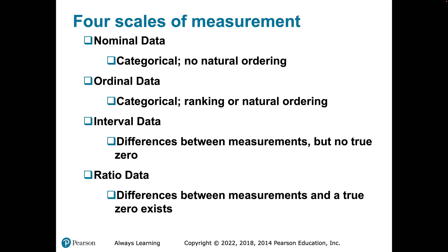We're going to move into four scales, breaking down categorical and quantitative measurements in a little bit more detail. The two breakdowns in categorical are nominal data and ordinal data.